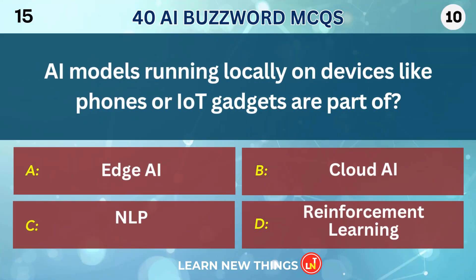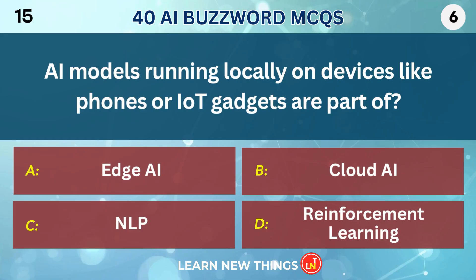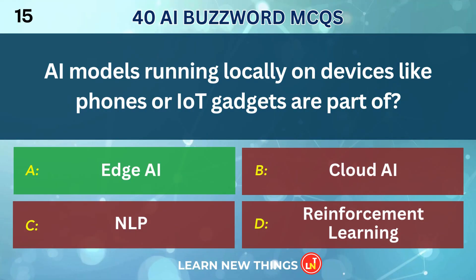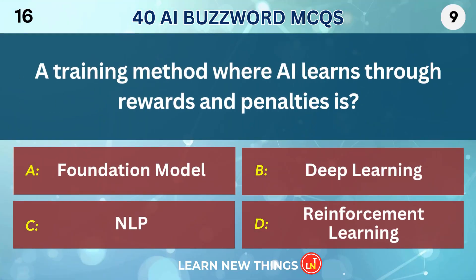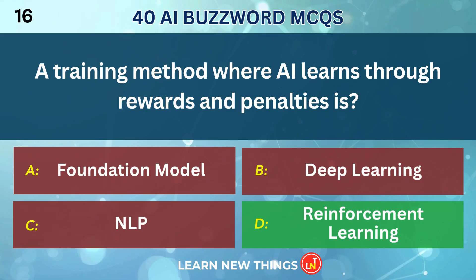AI models running locally on devices like phones or IoT gadgets are part of Edge AI. A training method where AI learns through rewards and penalties is Reinforcement Learning.